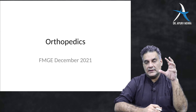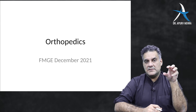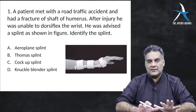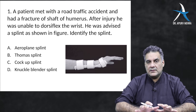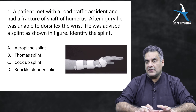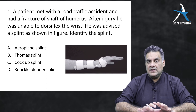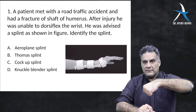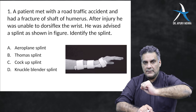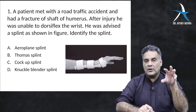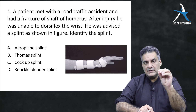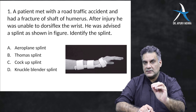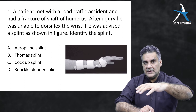Let's talk about the questions that came in FMG December 2021 in orthopedics. The first question: a patient with a road traffic accident has a fracture of the shaft of humerus, and after injury he was not able to dorsiflex the wrist. Dorsiflexion means extending the wrist. If you are not able to extend the wrist, your wrist extensors are gone. The nerve responsible for wrist extension or dorsiflexion is the radial nerve — so your radial nerve is gone.